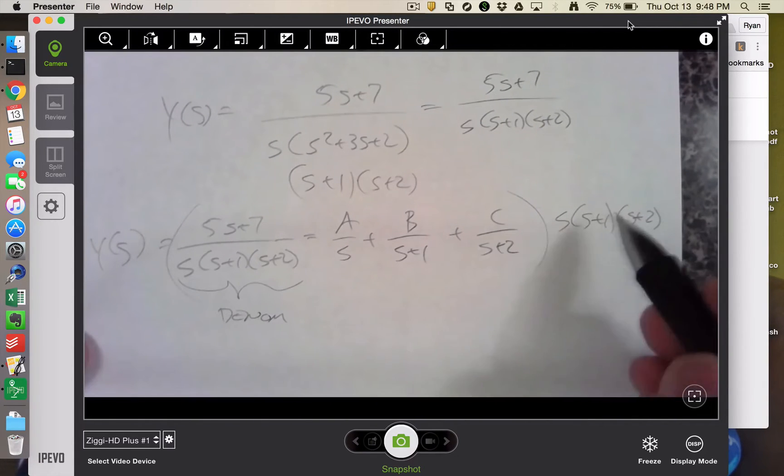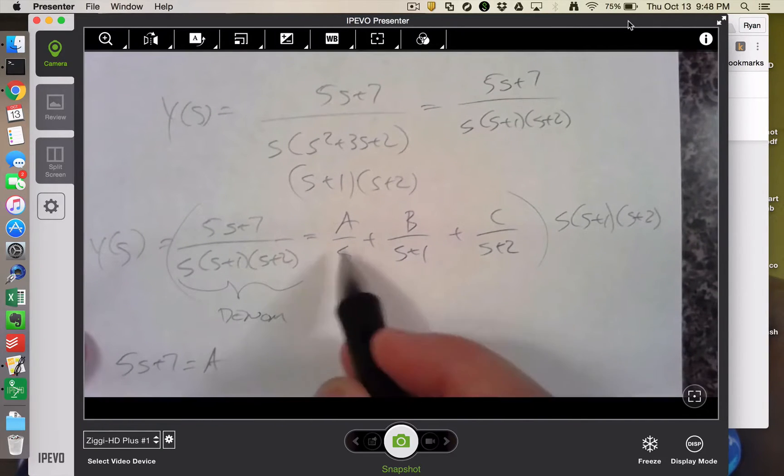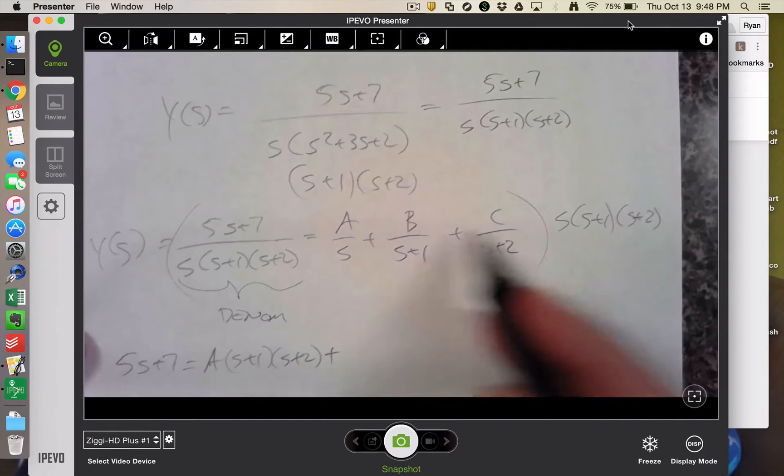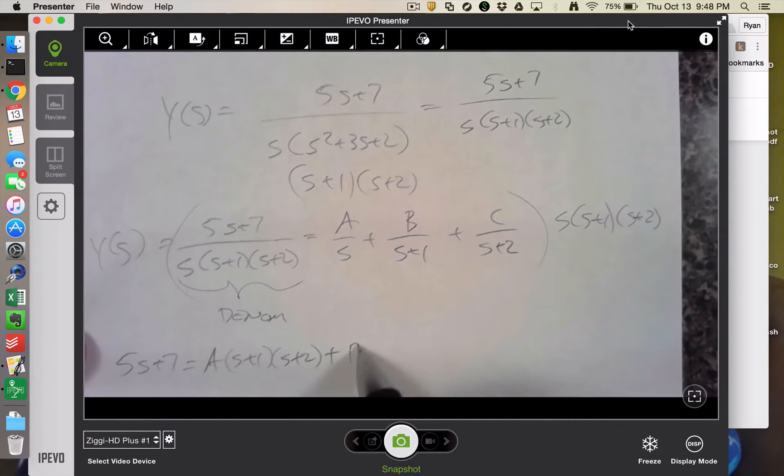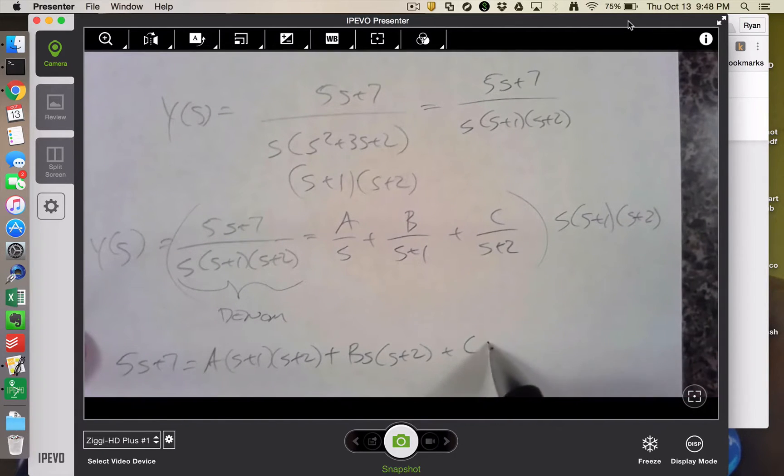I can then multiply both sides of this equation by this denominator, s, s plus 1, s plus 2. When I do that on the left, it'll cancel with everything. So I'll be left with 5s plus 7. That will equal a, and the s cancels, but this still multiplies s plus 1, s plus 2. And then with b, the s plus 1 term cancels. So I'm left with bs times s plus 2. And then with c, the s plus 2 cancels. So I'm left with cs times s plus 1.